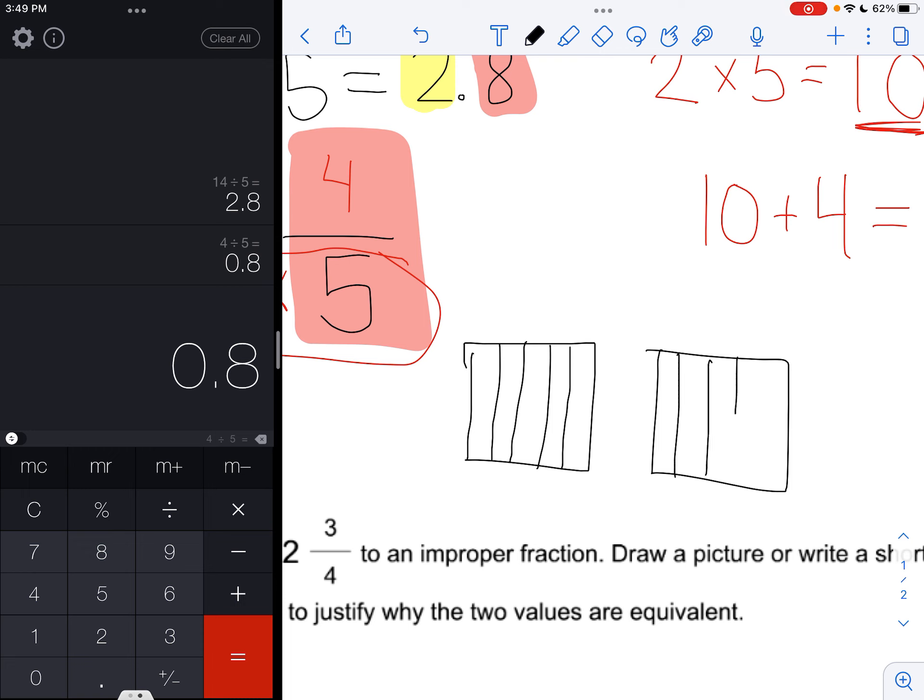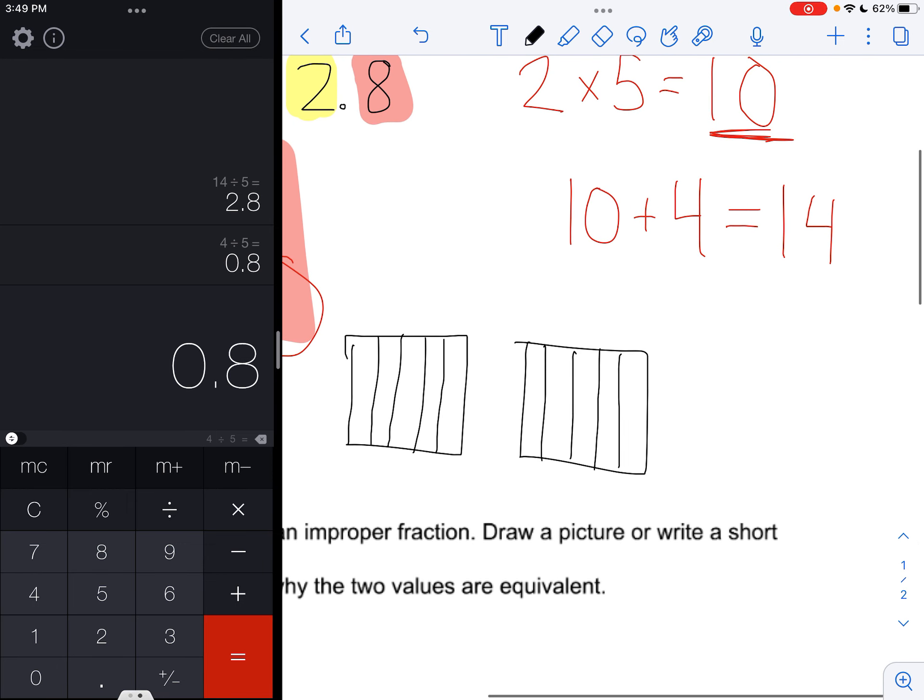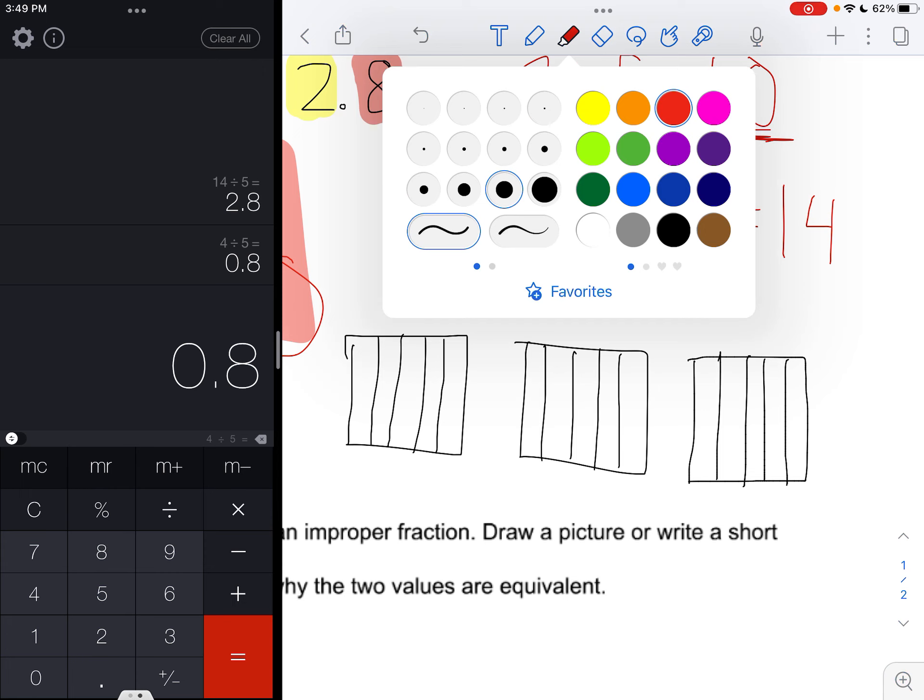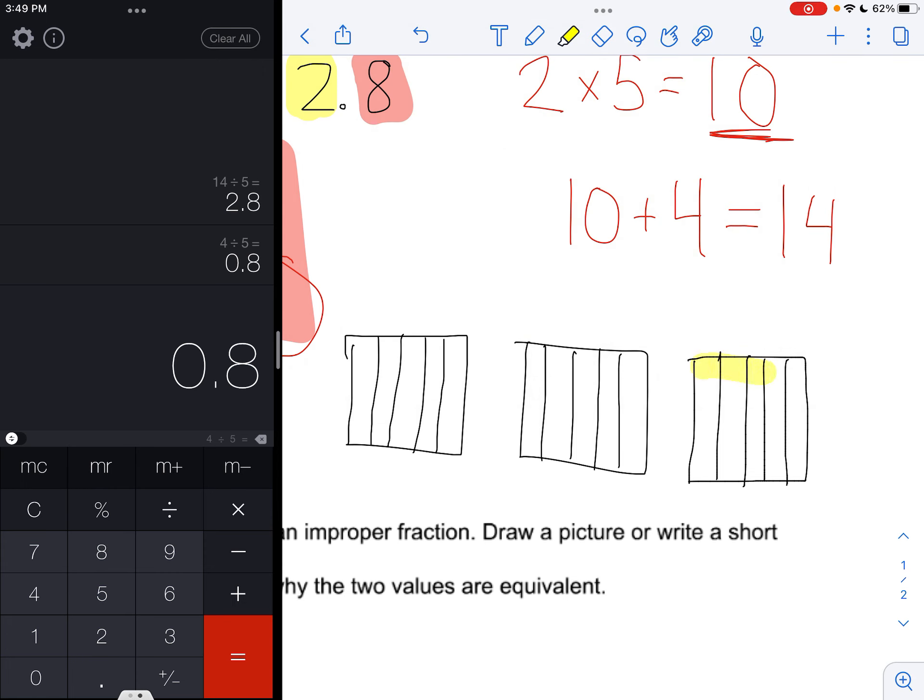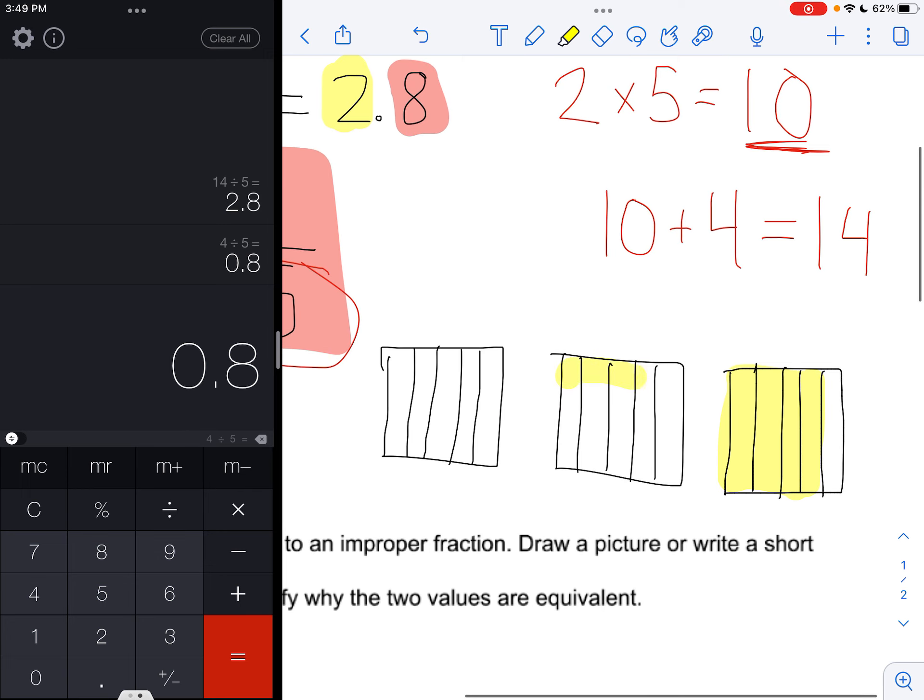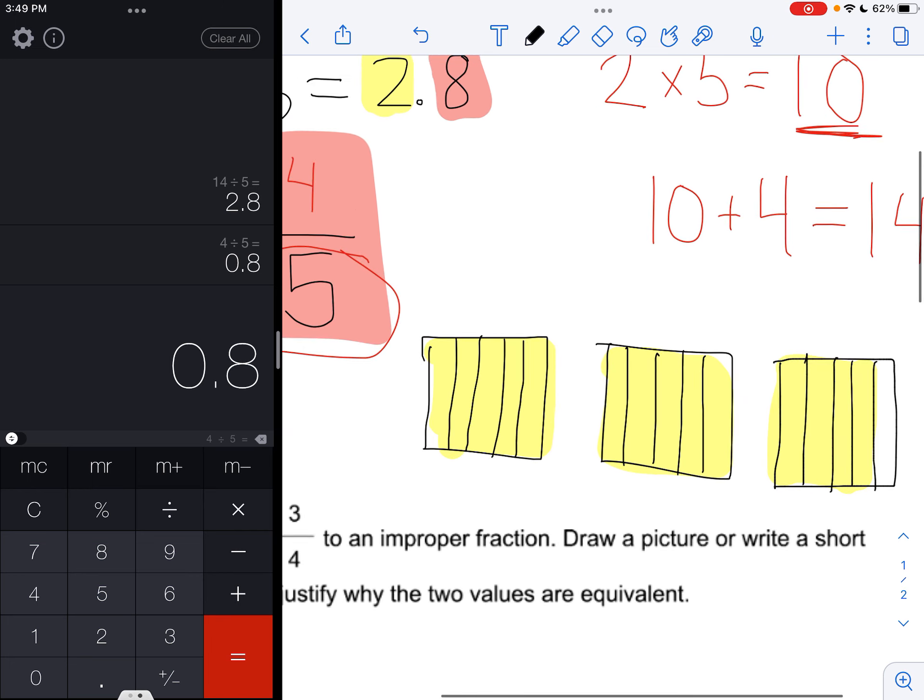And then we have 4 out of 5 left over. So we're going to draw another box. We're going to split this into the same amount of parts. But when we color it in, since we only have 4 of these 5, we're just going to color in the first 4. So then we color in this one as well, and we color in this one.